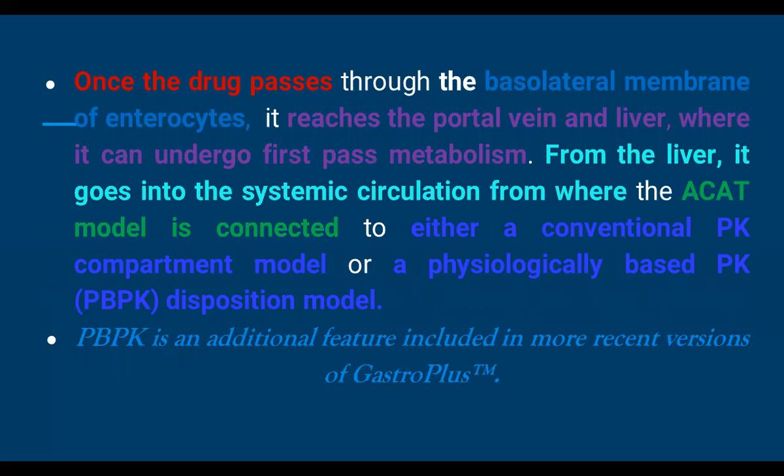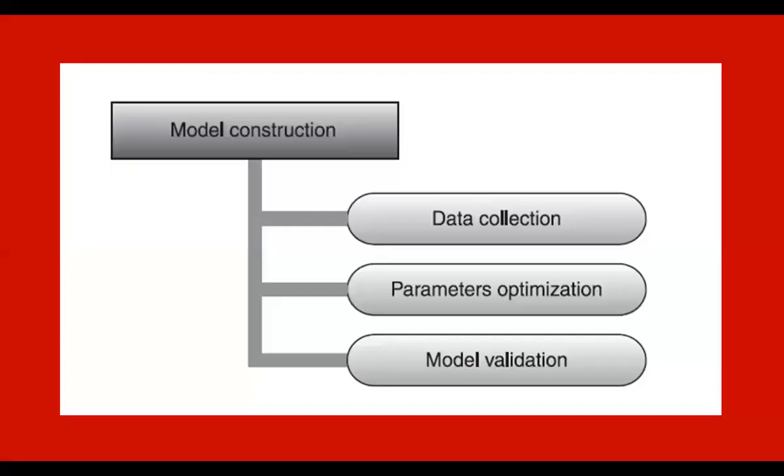Once the drug passes through the basolateral membrane of enterocytes, it reaches the portal vein and liver where it can undergo first-pass metabolism. From the liver, it goes into the systemic circulation, where the ACAT model is connected to either a conventional compartment pharmacokinetic model or a physiologically-based disposition model. The PBPK is an additional feature included in more recent versions of GastroPlus.